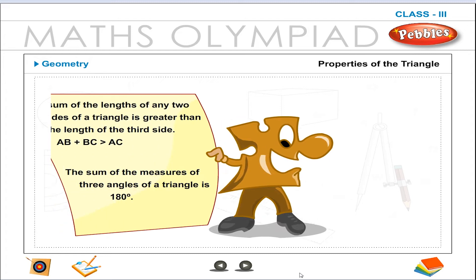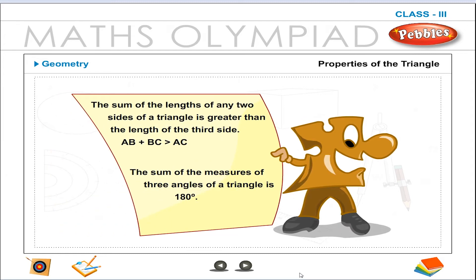Properties of the triangle. The sum of the lengths of any two sides of a triangle is greater than the length of the third side — AB plus BC is greater than AC. The sum of the measures of the three angles of a triangle is 180 degrees.